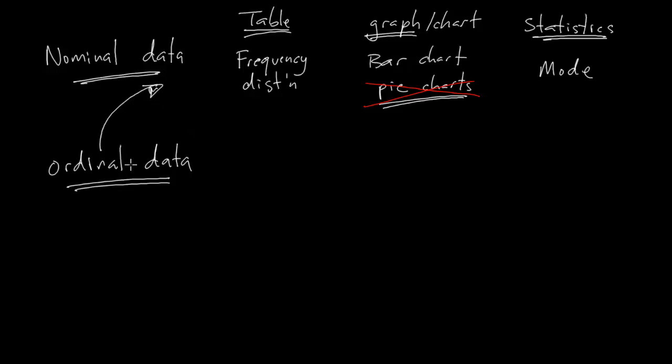So ordinal and nominal data will always have a frequency distribution as being the main table, a bar chart as being the main chart, and the mode. Actually, there is one thing I could add to ordinal data. I could, because there is an order to it, I could have a median.